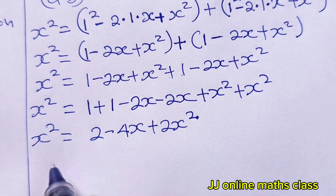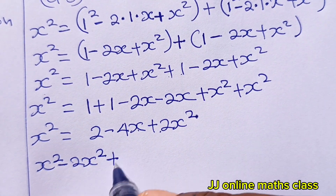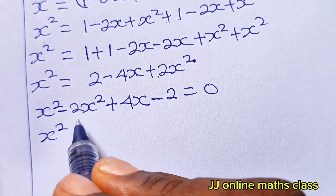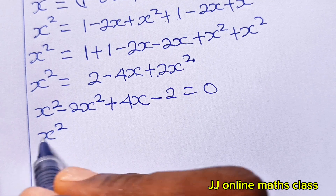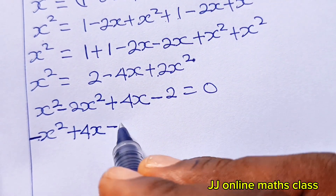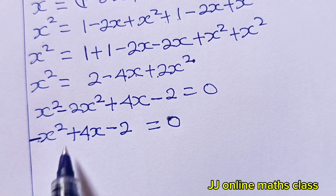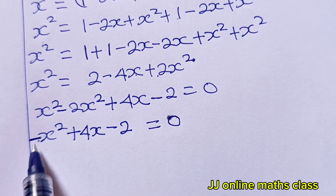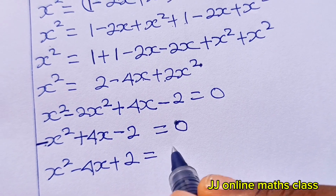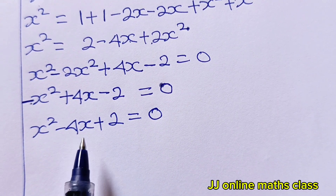Rearranging: x² − 2x² + 4x − 2 = 0, which gives −x² + 4x − 2 = 0. Multiplying through by −1 to remove the negative sign, we get x² − 4x + 2 = 0. This is our quadratic equation.